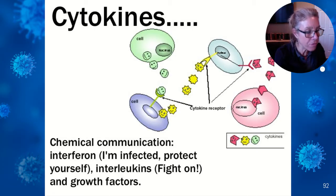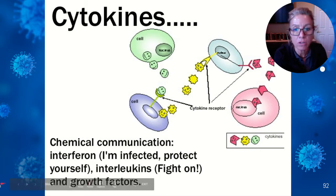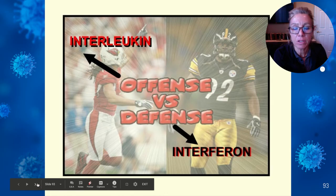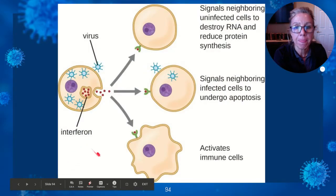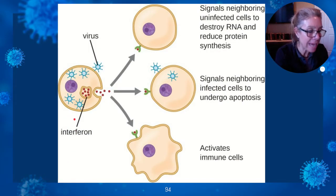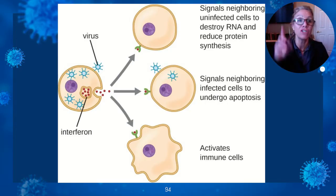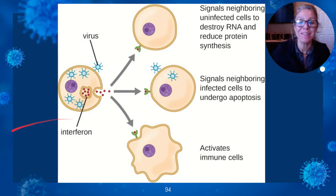Interferon is a type of cytokine released by virus-infected cells as a warning to protect other cells. An interleukin antagonist may help prevent organ rejection, autoimmune diseases, and allergies.